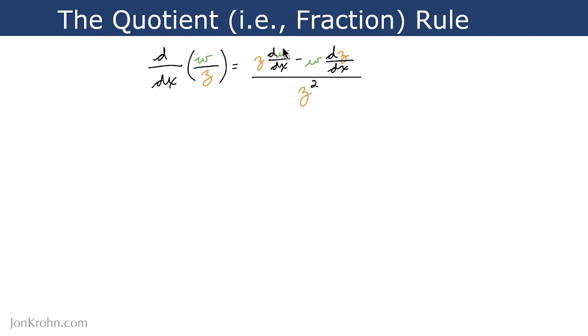So the quotient rule has z dw/dx and w dz/dx as separate terms in the numerator, and we subtract w dz/dx from the first term.